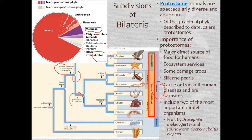Two of the most important model organisms are Drosophila — the fruit fly, which you will learn all about if you take genetics next semester — and C. elegans, which is a roundworm. By studying these, particularly in the cases of genetics and development, we can learn a lot about other organisms, including humans.